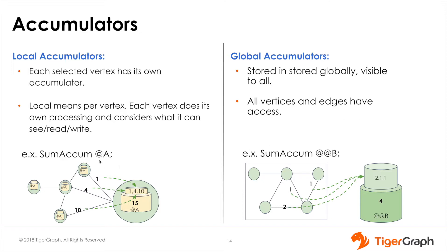Local accumulators are declared with a single at symbol (@), and global accumulators are declared with two at symbols (@@). Local accumulators store information about each vertex and can only be accessed by the traversal instance — they are basically runtime attributes for each vertex. If you traverse to the same vertex again in the same query block, you will be able to see and make decisions based on that attribute information. For example, a local accumulator can be the average age of neighbors or the number of neighbors that satisfy a certain condition.